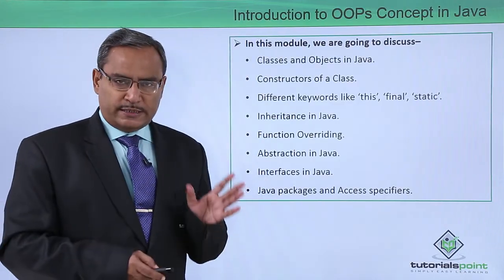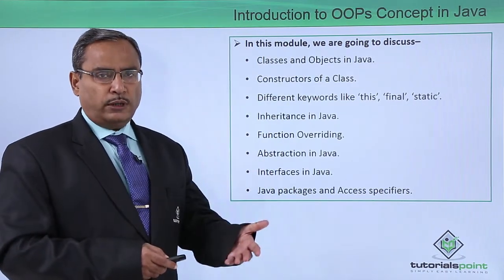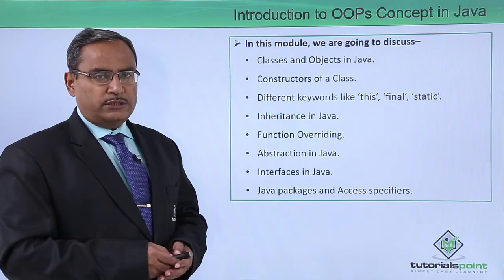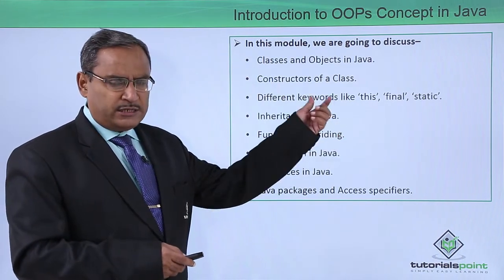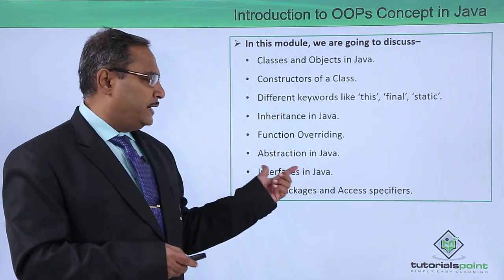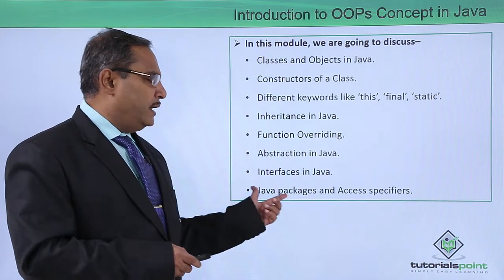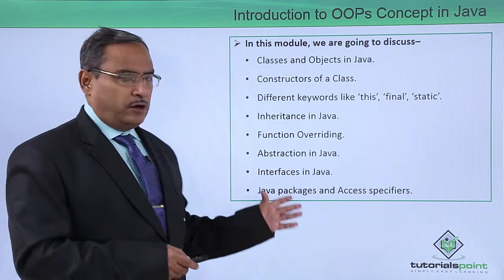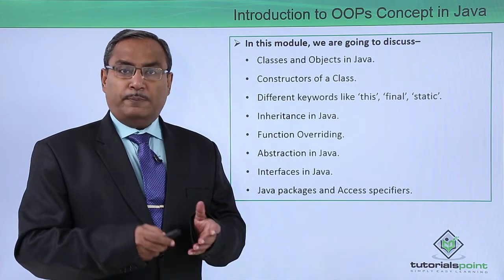In this chapter, we are going to discuss the following sections: classes and objects in Java, with practical demonstration on each one of them, then constructors of a class, different keywords like the final and static keywords, then inheritance in Java, function overriding, abstraction in Java, interfaces in Java, Java packages and access specifiers. All these sections will be covered with discussion and practical demonstration.